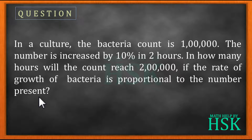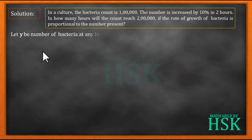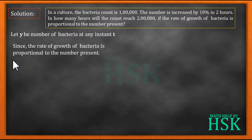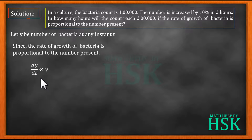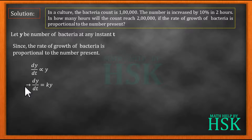The growth is always proportional to the amount of bacteria present at a given moment. Let y be the number of bacteria at any instant t. Since the rate of growth of bacteria is proportional to the number present, we can say dy/dt is proportional to y. On removing the proportional sign, I place a proportionality constant k, so this becomes a differential equation.